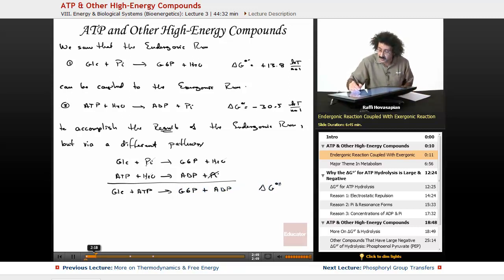And the delta G for this, which is just the sum of the delta Gs of the previous reactions, we ended up with minus 16.7 kilojoules per mole.